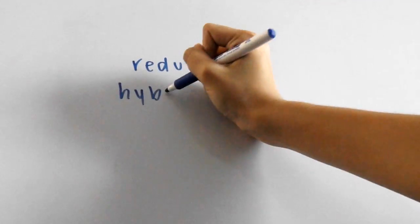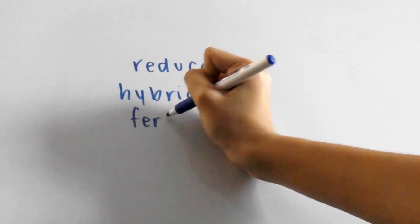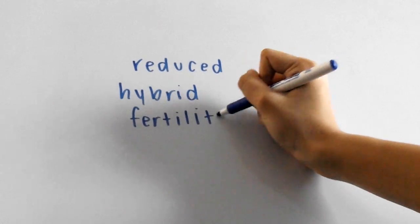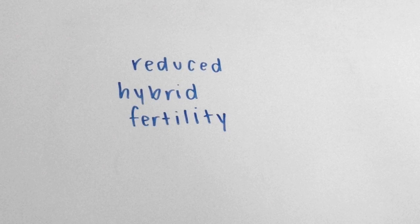This is a reproductive barrier called reduced hybrid fertility since the offspring aren't fertile. Let's take a closer look at the different reproductive barriers.